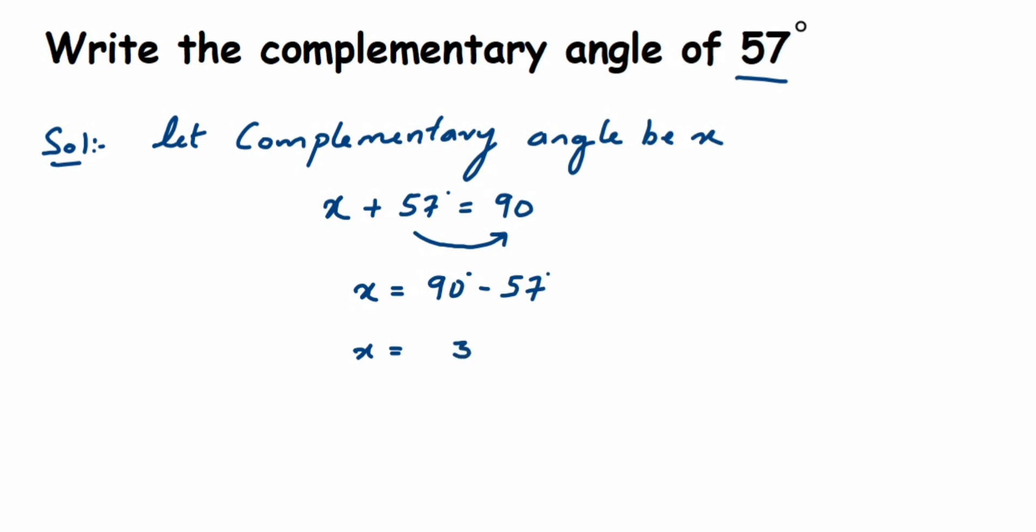So the answer is 33. So 33 plus 57 is going to give you angle 90 degrees. So the complementary angle of 57 is nothing but 33 degrees. I hope it's clear how we have got this.